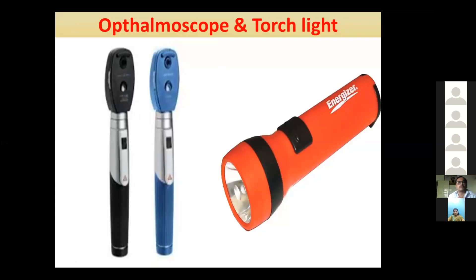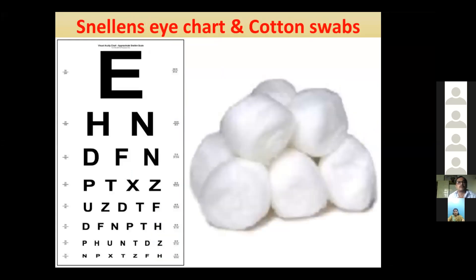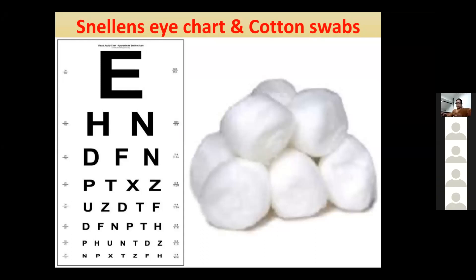The ophthalmoscope is responsible for examining the eye, and any fundus abnormality can be seen with it. A torchlight is used for the pupillary reflex. The smell pad plays an important role in identifying refractory errors in the patient. Cotton swab is concerned with touch sensation.